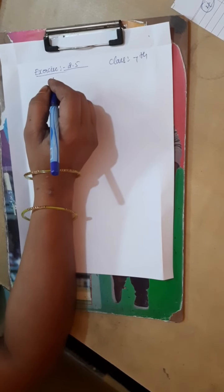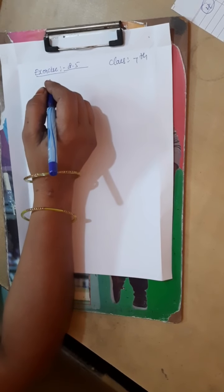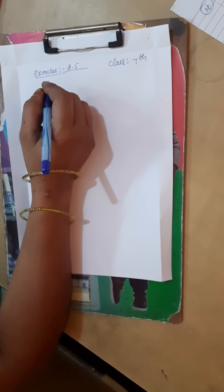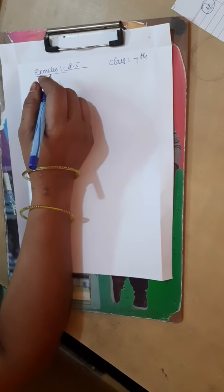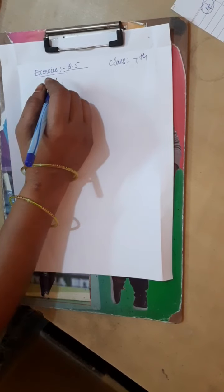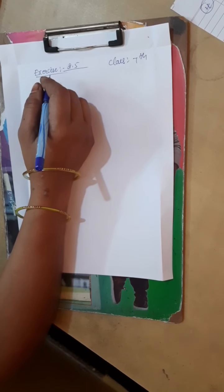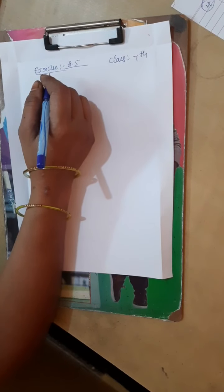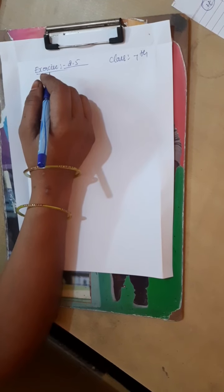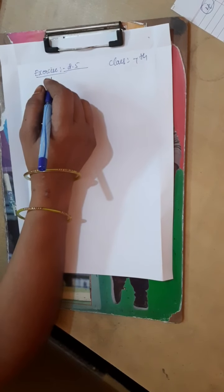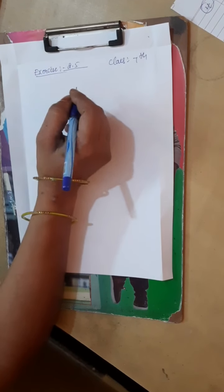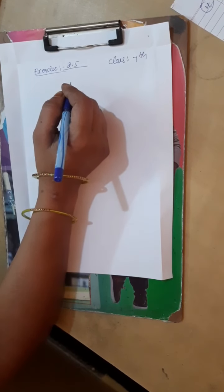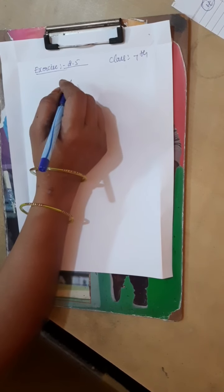So in this exercise 2.5, we discussed 1st main, 2nd main, 3rd main, 4th main. And also we have learnt how to change decimals into fractions, and also how to decide or verify which one is greater and which one is lesser, and how to convert paisa into rupees and rupees into paisa, and also kilometer into meter, meter into centimeter and centimeter into millimeter. So this and all we discussed.